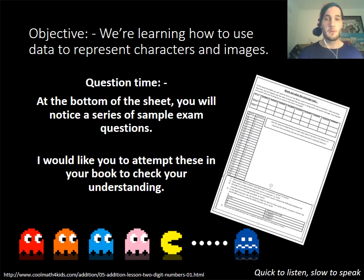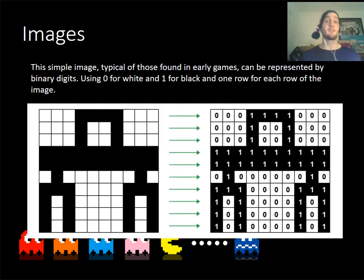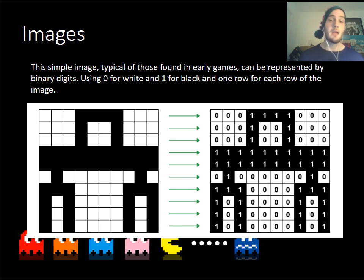In my lesson I gave you some worksheets, so you may want to go back into your folders and have a look at those and attempt them again, just to improve your understanding of how and why we use ASCII. Now, representing images is very different. What you can see here is a blank grid with ones in binary - this is just how an image might look represented in binary, and this is how computers represent images.